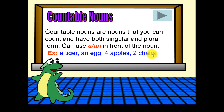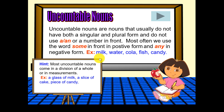We can even add 's' because it's countable. Now, here's another rule. Uncountable nouns are nouns that do not have a singular and plural form, so we cannot use a or an.